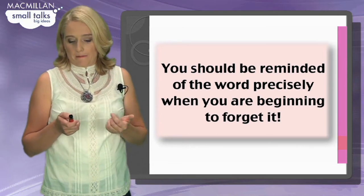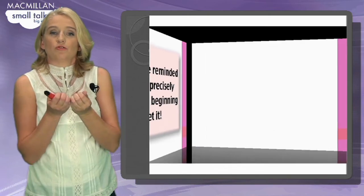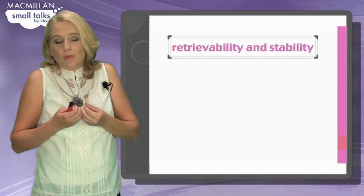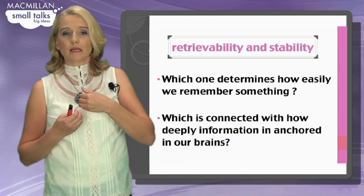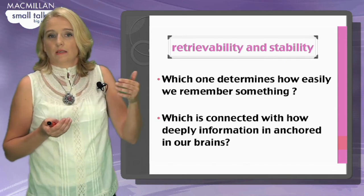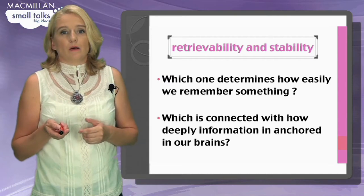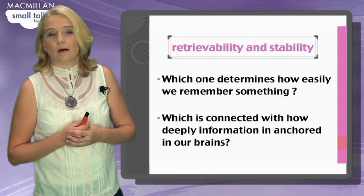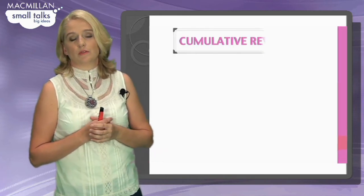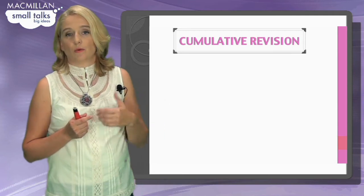I believe it works for my students. This is all based on how easily we can retrieve language, but what is even more important is how stable the language is in our brains. For this stability to happen, the cycle of 1, 10, 30, and 60 days should be carried out. Now for the practical aspects of how this can be achieved — here are some ideas you can use when you want to revise language in this particular cycle.